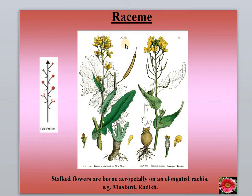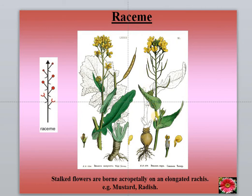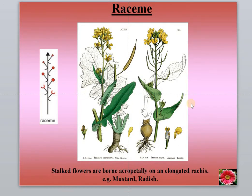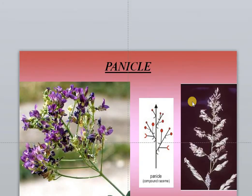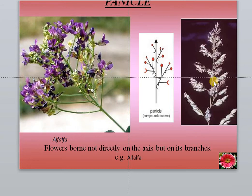We have learnt about racimose and cymose inflorescence. Looking at the diagram of Cleome viscosa, the flower is like this, with the tip showing developing buds and older fruits toward the base with opened flowers in the middle. Flowers are on pedicels, and this kind is called a raceme. A simple raceme. Then there is a panicle, where the tip is growing and lateral buds produce simple raceme branches. An example is alfalfa.